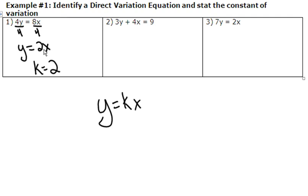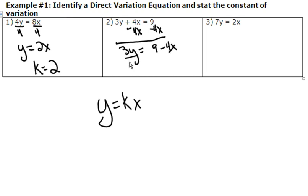k is the constant of variation — it's the number or the coefficient in front of your x value. If I look at number two, I would first solve for y. I'm going to subtract 4x. I get 3y equals 9 minus 4x, and I would divide everything by 3. If I divide by 3, I get y equals 3 minus 4 thirds x. This is not a direct variation equation because we have a constant value. Direct variation is just y equals k times x, and we also have a positive 3, so it is not direct variation.